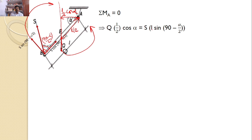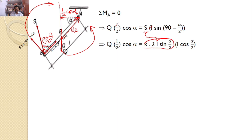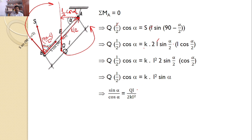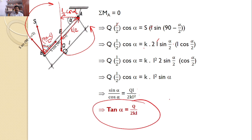The spring force S equals K × 2L × sin(alpha/2), and sin(90 − alpha/2) equals cos(alpha/2). After simplification, using the identity 2 sin(alpha/2) cos(alpha/2) = sin(alpha), you get sin(alpha) / cos(alpha) = Q / (2KL), or tan(alpha) = Q / (2KL). This is the answer for the given problem.